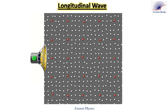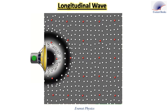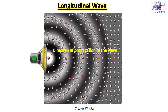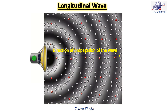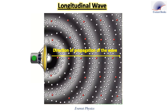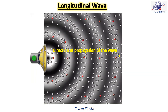Let's move to longitudinal waves. Sound waves in air are longitudinal. The membrane of the loudspeaker is the vibrating object which produces sound traveling to the right. When the membrane moves forward, it pushes air particles forward, creating a high-pressure region called compression. When the membrane moves backward, it leaves behind a low-pressure region called rarefaction.